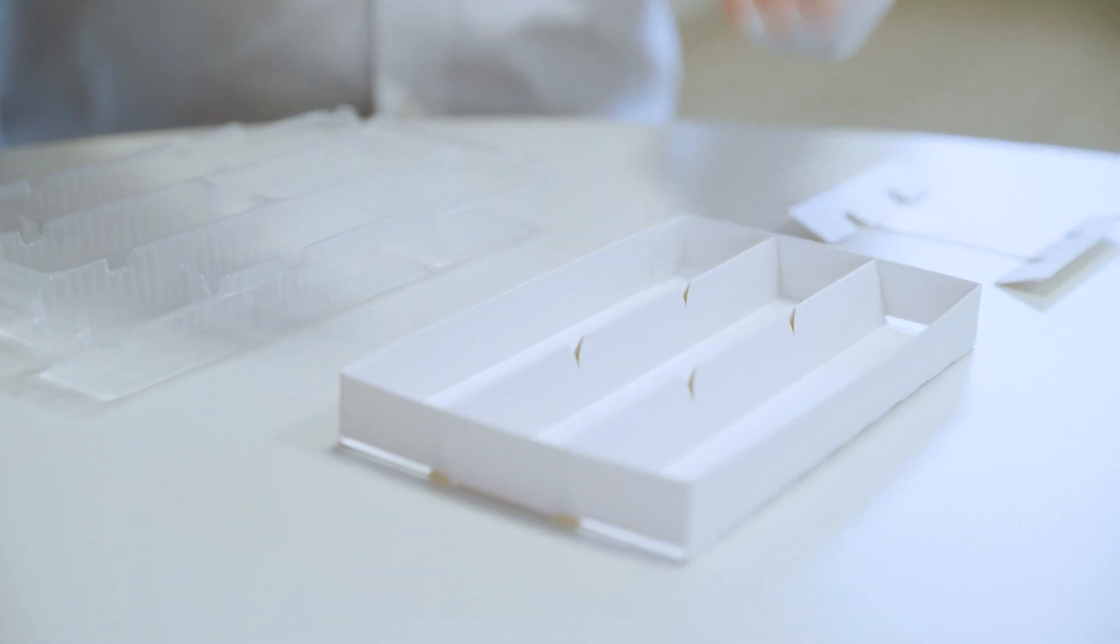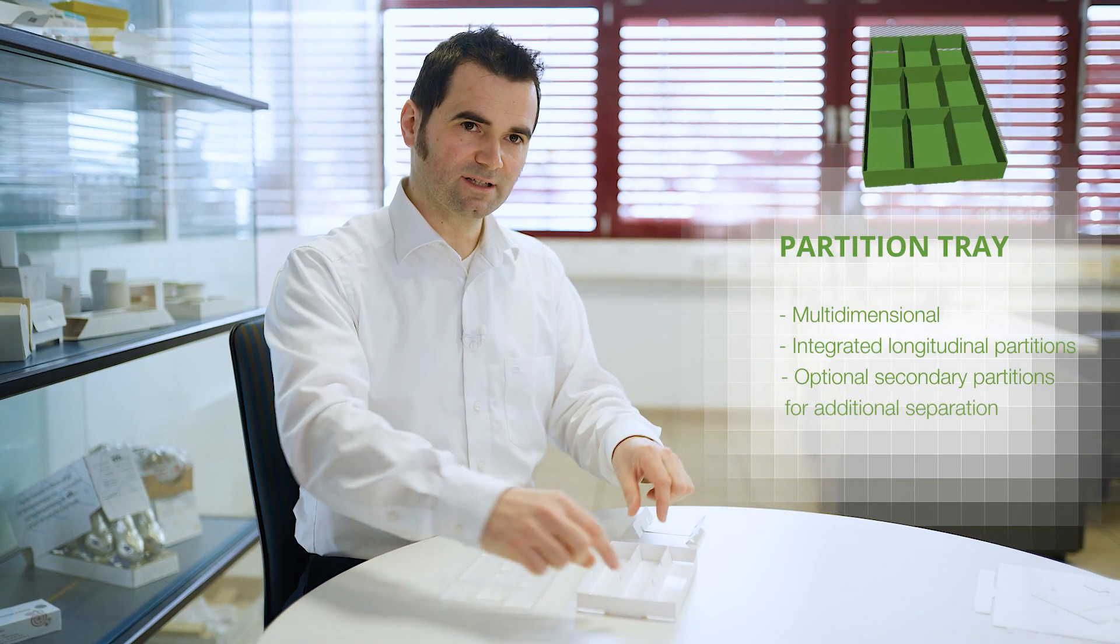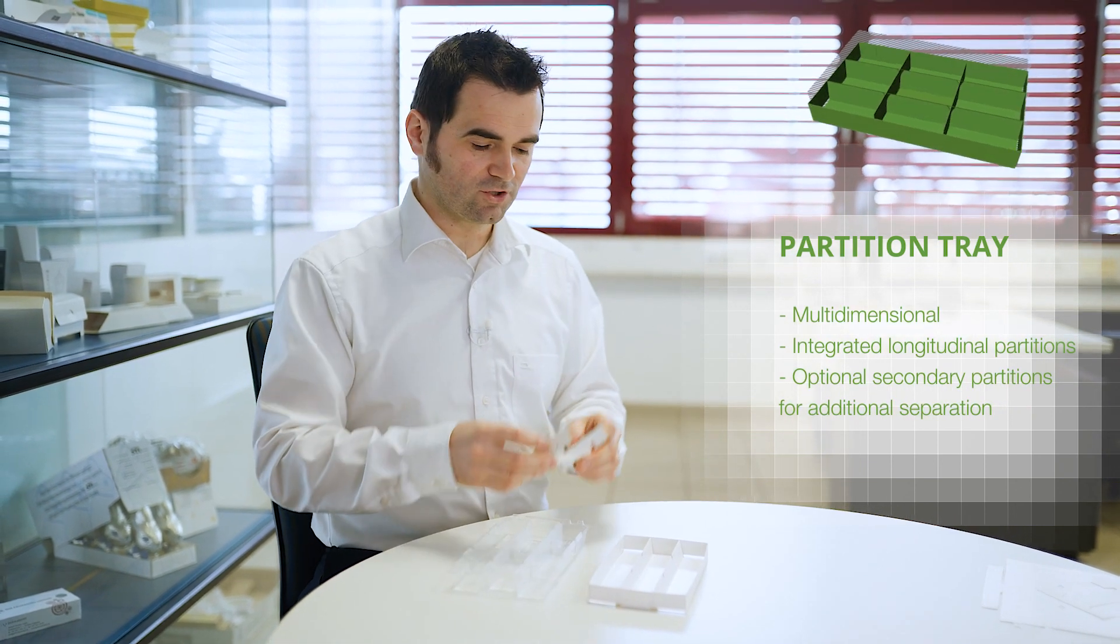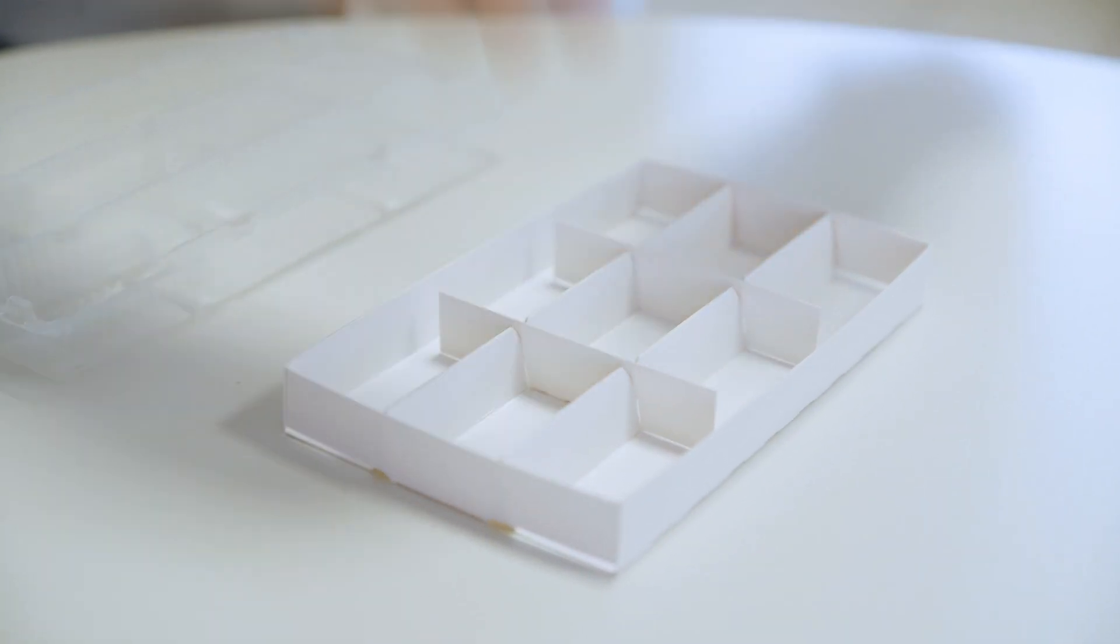Our alternative, made of cardboard, already has integrated longitudinal bars in the assembled box, and in a second assembly step, a second partition bar can be inserted, two crossbars to be precise, so that we can produce nine separate cavities in two dimensions.